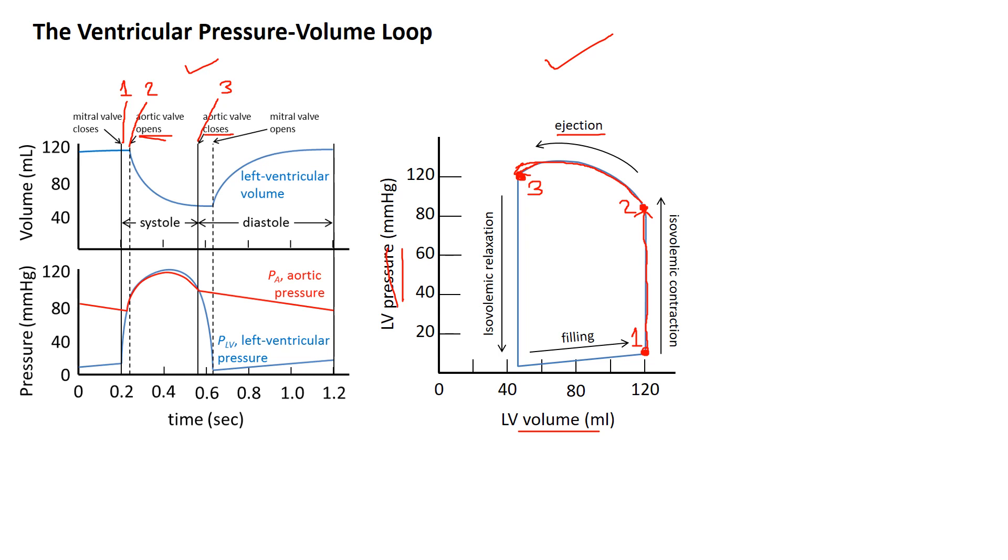Once again, at this point, both valves are closed. So when diastolic relaxation starts, volume stays constant. We call that isovolumic relaxation.